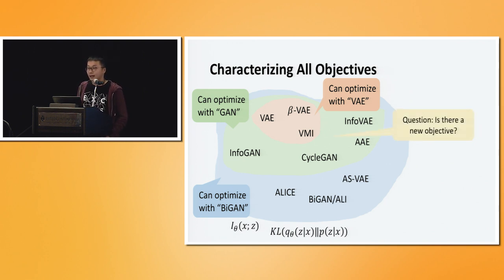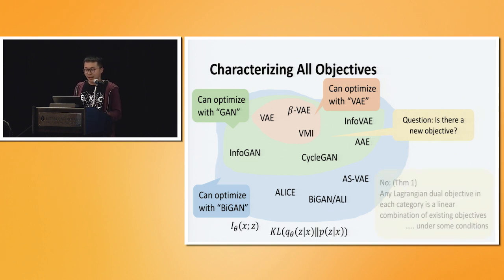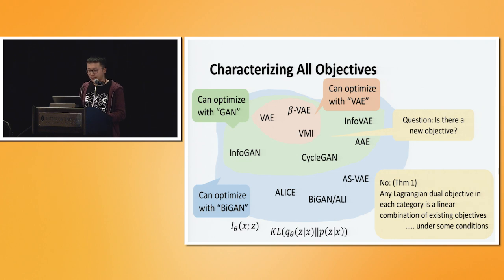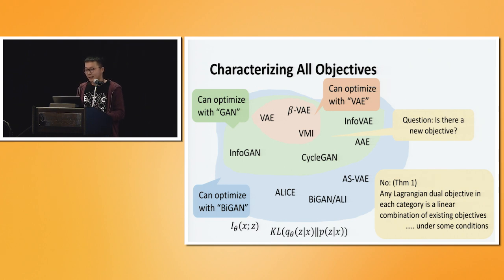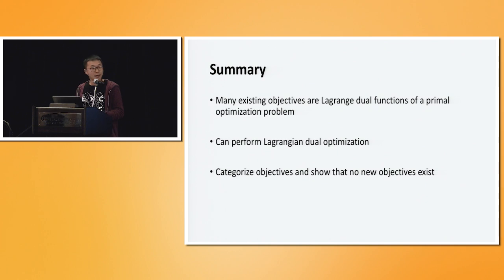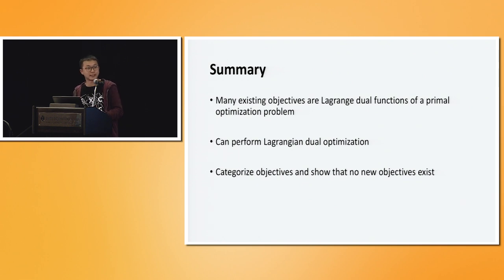One natural question to ask is whether there is a new objective we could propose. Unfortunately, the answer is no. We prove in the paper in theorem one that any Lagrangian dual objective in each of these computability categories is a linear combination of existing objectives. There are some conditions, but they are pretty mild. This kind of means that we have published so many papers that all the objectives are almost found. To summarize: we show that many existing objectives are Lagrangian dual functions of a primal optimization problem; we show we can perform Lagrangian dual optimization for Pareto optimality; and we categorize the objectives and show that no new objectives exist under some conditions. Thank you.